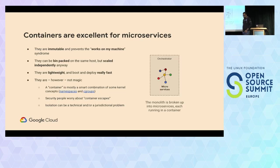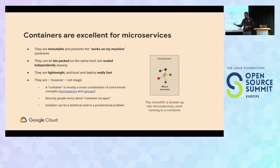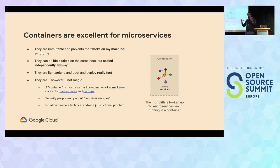And then containers showed up at some point with Docker. Docker really just democratized the concept of containers — containers existed in Linux for a very long time. What containers did is they made microservices easier. They are very immutable and they avoid the 'works on my machine' problem, because a container is inherently an application, its configuration, and its dependencies all bundled together. They are also very easy to bin-pack — you can cram as many containers as you want into a single node.